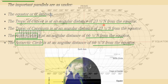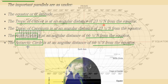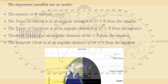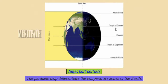The important parallel lines are: the equator at 0 degrees, the Tropic of Cancer at 23.5 degrees north, the Tropic of Capricorn at 23.5 degrees south, the Arctic Circle at 66.5 degrees north, and the Antarctic Circle at 66.5 degrees south. These important parallels — the equator, Tropic of Cancer, Arctic Circle to the north, and Tropic of Capricorn, Antarctic Circle to the south — are all visible on the globe.